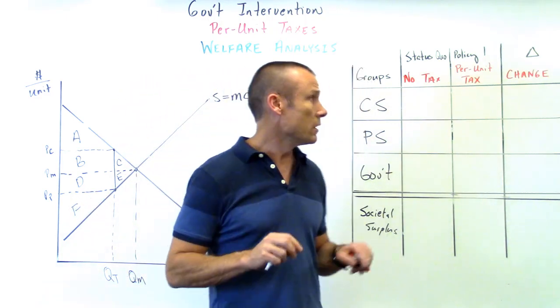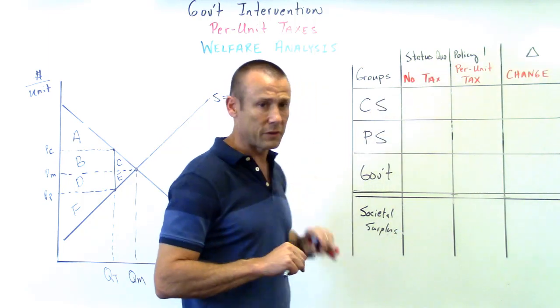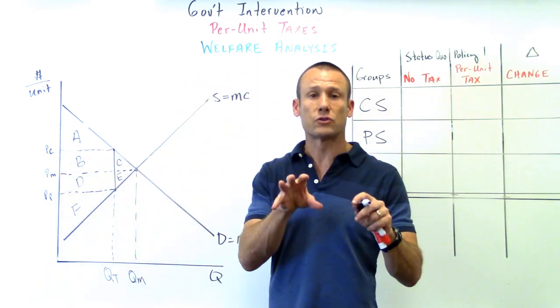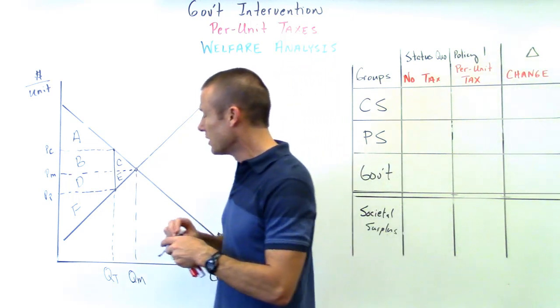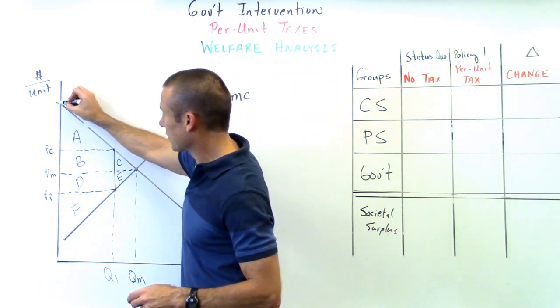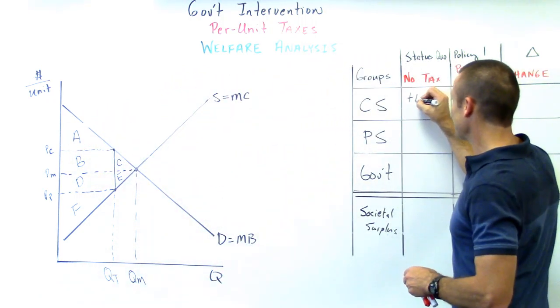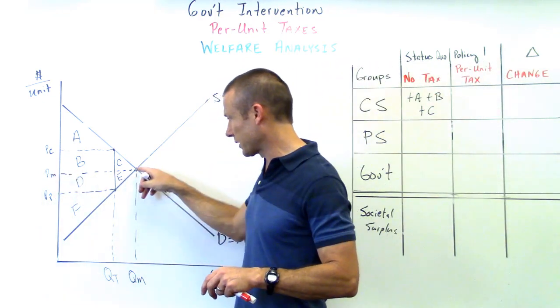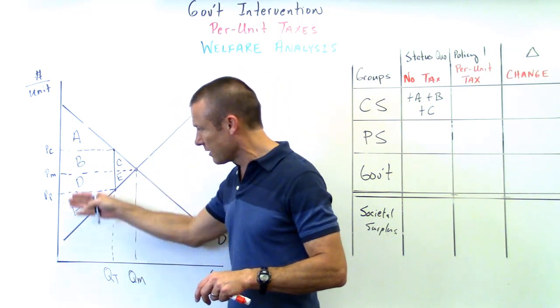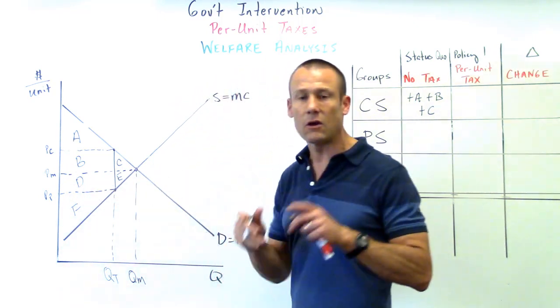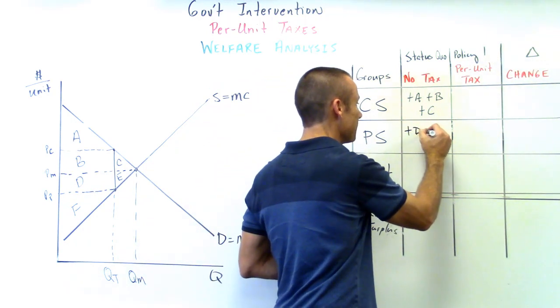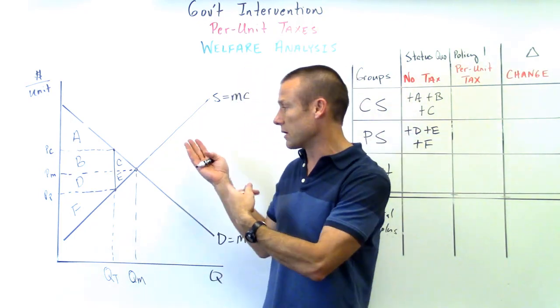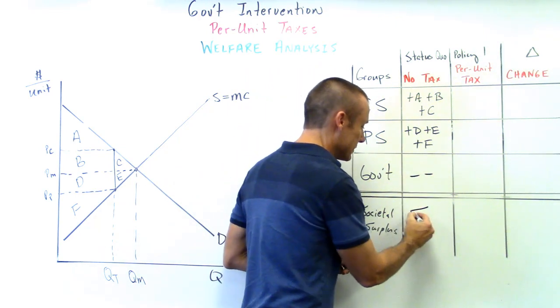No tax, status quo - what would be the consumer surplus? If there was no tax, price market would prevail. Price consumer, demand curve, plus a plus b plus c. Producer surplus, once again price market is the per-unit revenue, there's the marginal cost - the area in between d, f, and e all going to the producer. Plus d plus e plus f. Government, if we have no tax they're not getting any money. Sum that up.